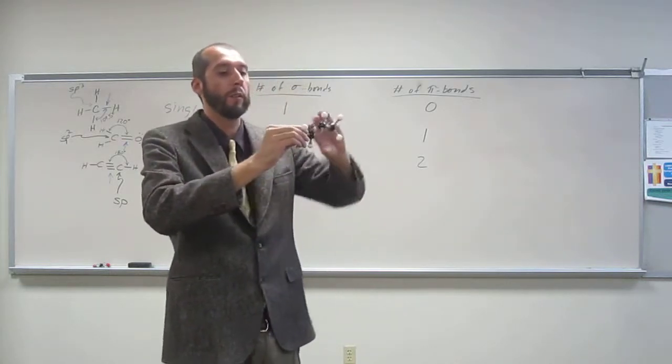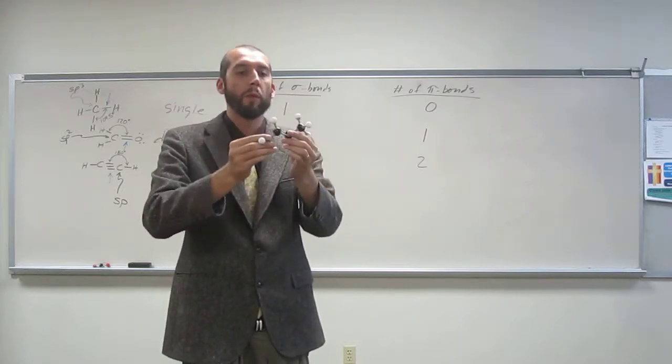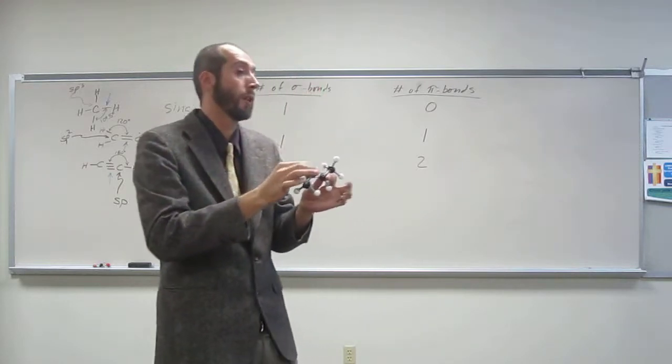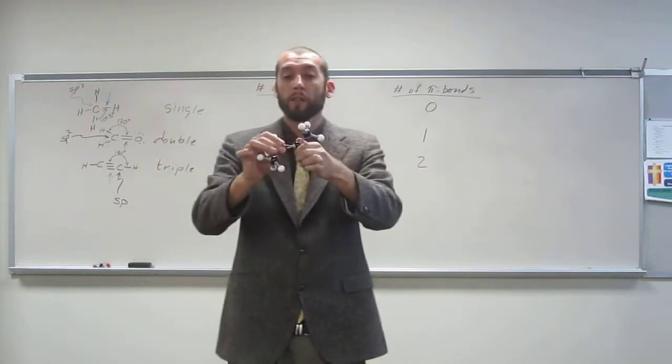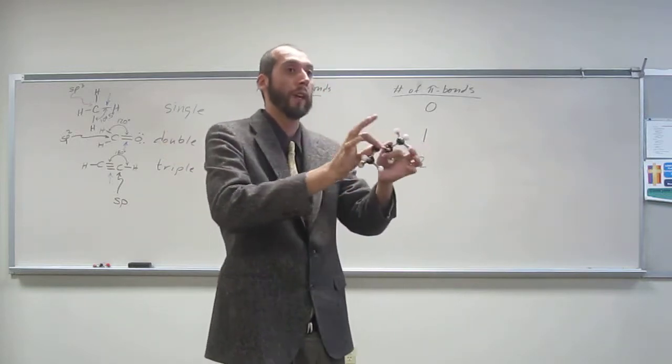I can hold either side and rotate freely. But once you get to a double bond or a triple bond for that matter, free rotation becomes impossible. Do you guys see me trying to rotate the double bond? That's not happening.